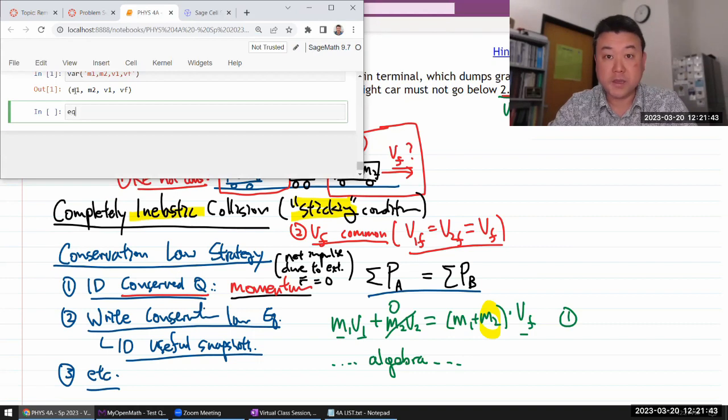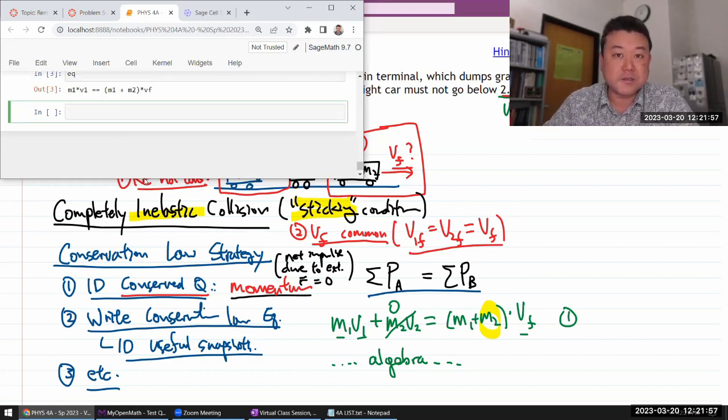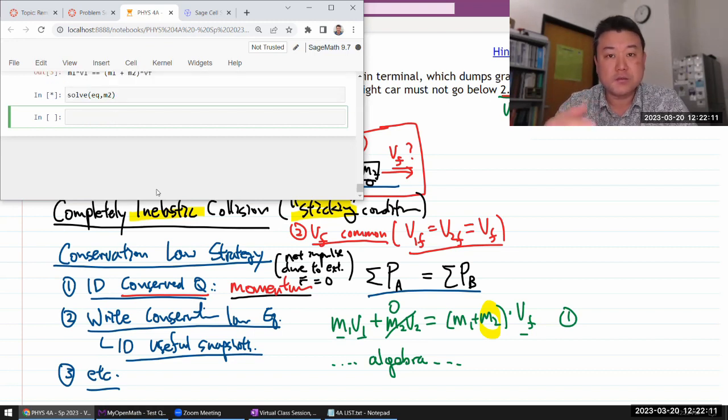Let me define my equation, which is M1 times V1 plus 0 is equal to M1 plus M2 times V final. It's an easy equation, and, you know, solving it, it's easy algebra. I'm just purposefully being lazy. So let me take this equation and have the system solve this equation for M2, mass of grain, which is what we want.